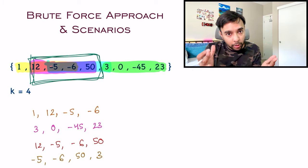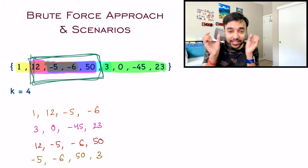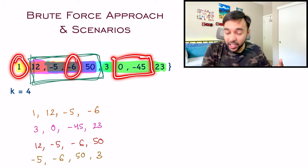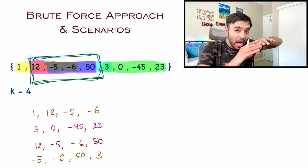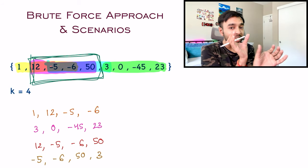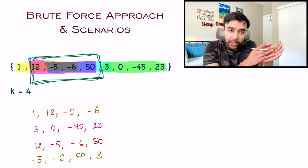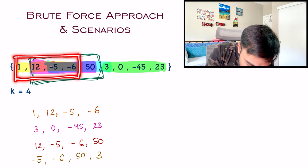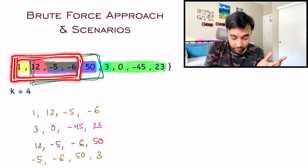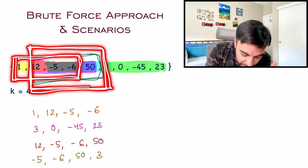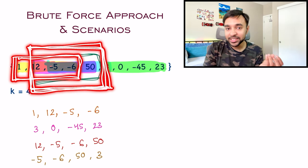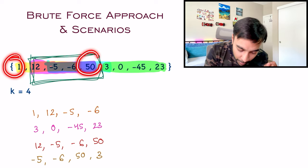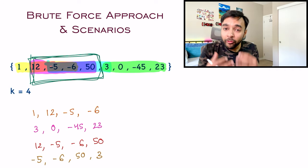If you look closely, the brute force approach never takes advantage of the fact that the subarray has to be contiguous. You also never take advantage of results calculated earlier. Think about it — when you move from one subarray to the next, three of the four elements are already the same. You are just removing one element and adding another. That is the only change happening, so why not take advantage of it? This is exactly where the sliding window algorithm comes in.